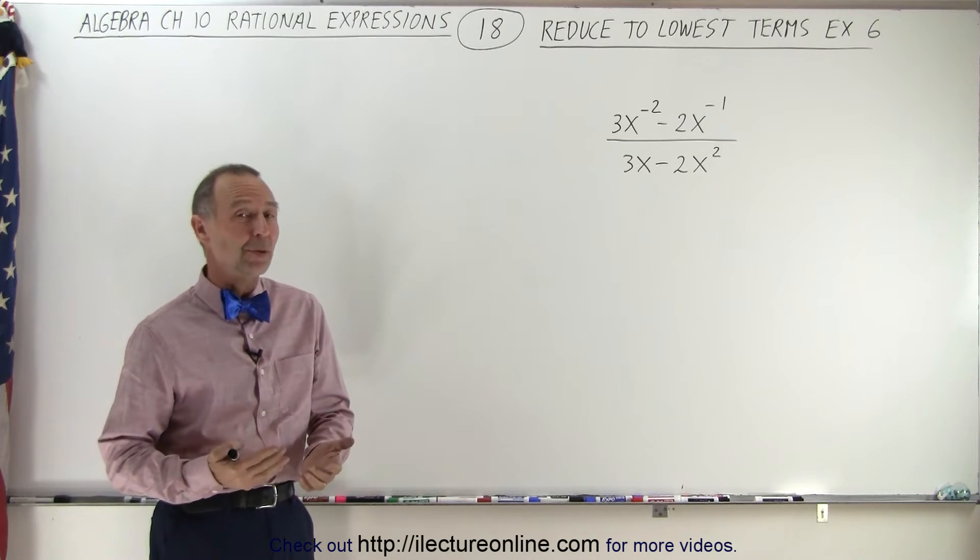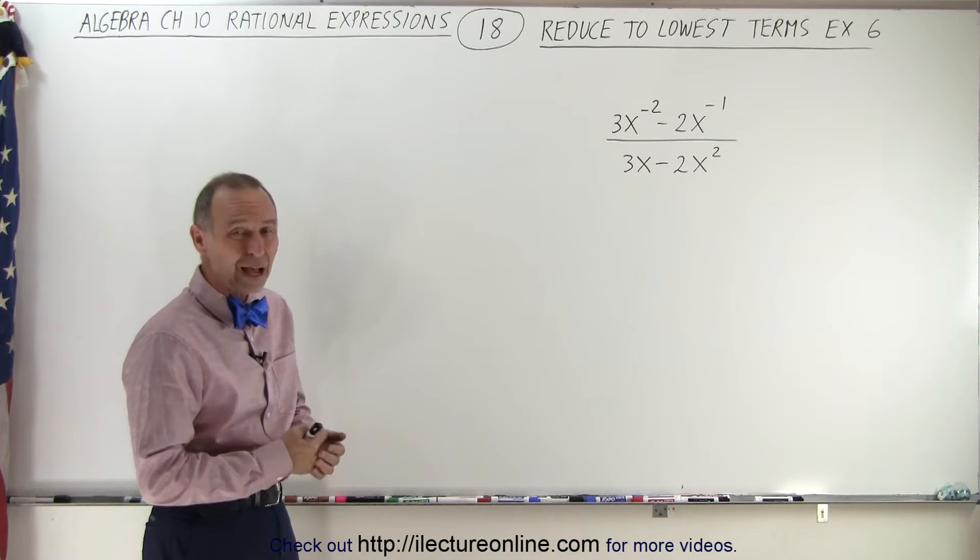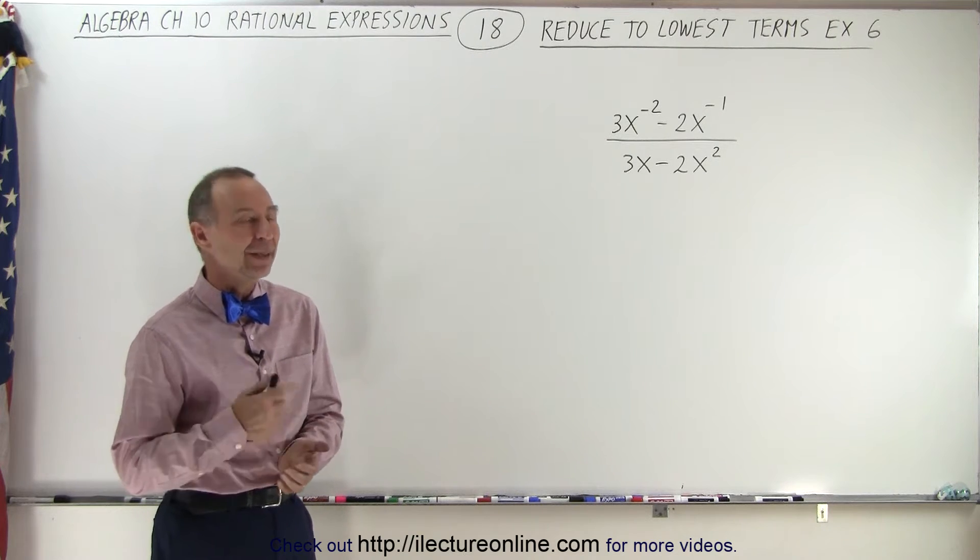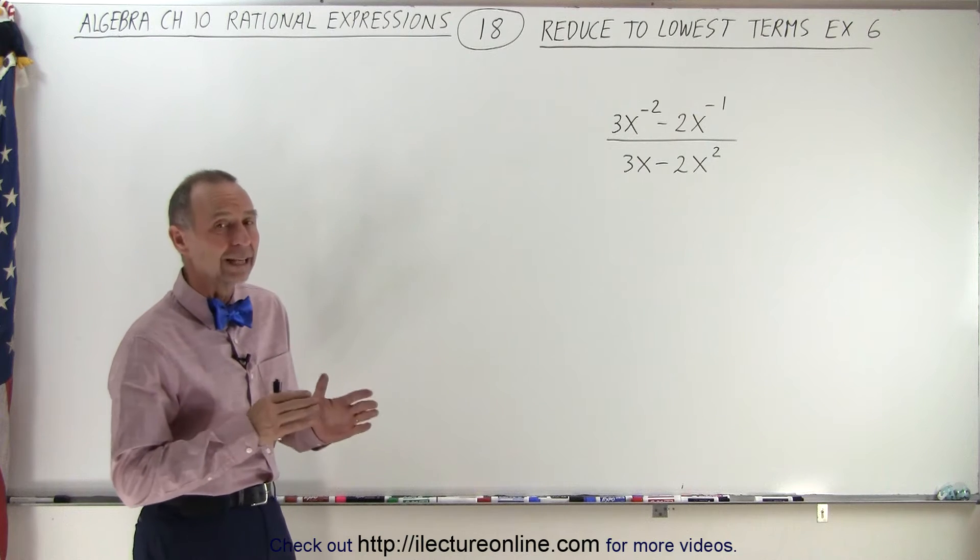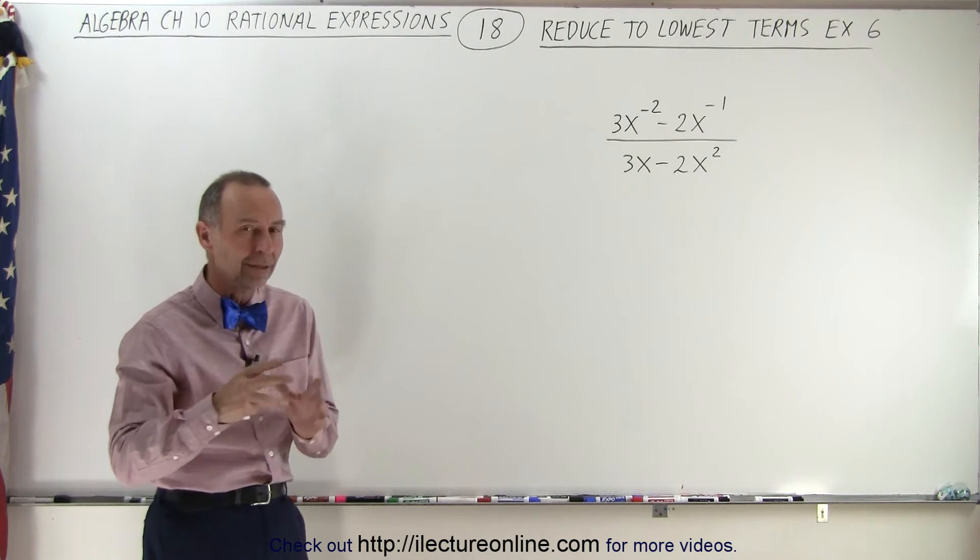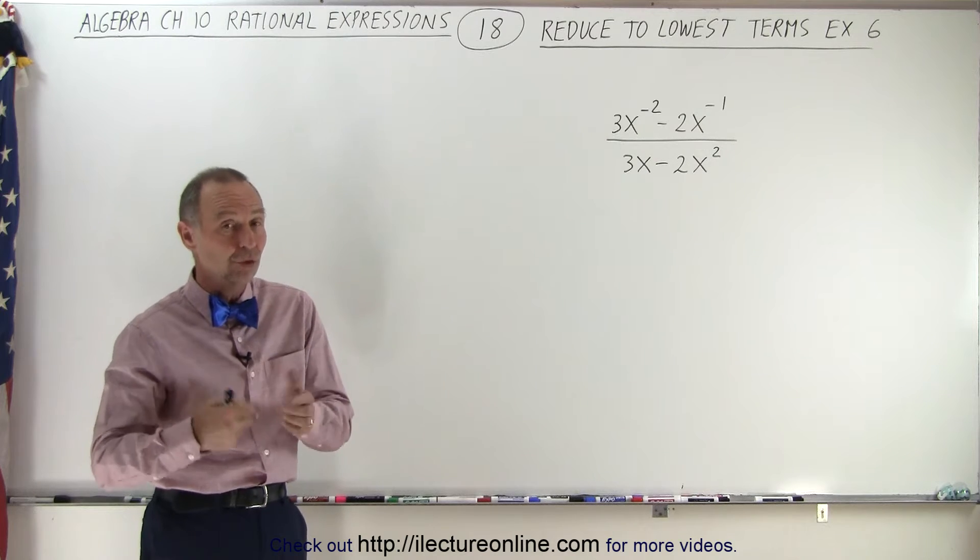If you notice, there's some negative exponents in the numerator, and so how do you factor that out? The best thing to do is to get rid of the negative exponents by multiplying the numerator and the denominator by the correct factor to do so.